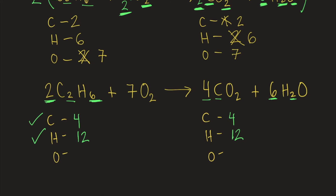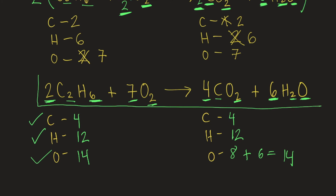For oxygen: on the left side, 7 times 2 is 14; on the right side, 4 times 2 is 8, plus 6 times 1 is 6, which also equals 14. Therefore, oxygen is already balanced. The answer is: 2C2H6 + 7O2 → 4CO2 + 6H2O. This is the balanced reaction for the complete combustion of ethane.